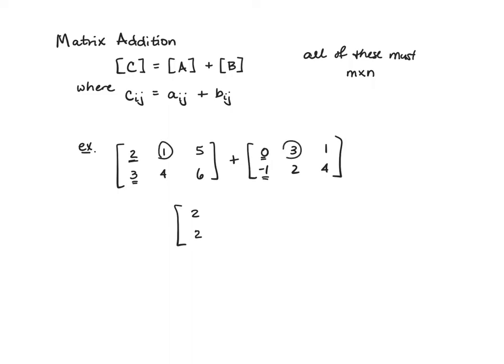Moving over to the second column. One plus three is four. Four plus two is six. Five plus one is six. Six plus four is ten. And so our answer is the same size and shape.